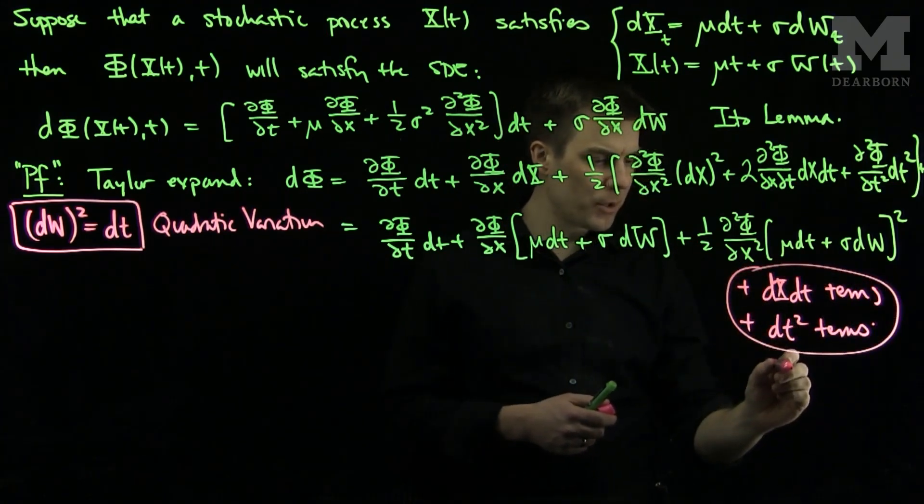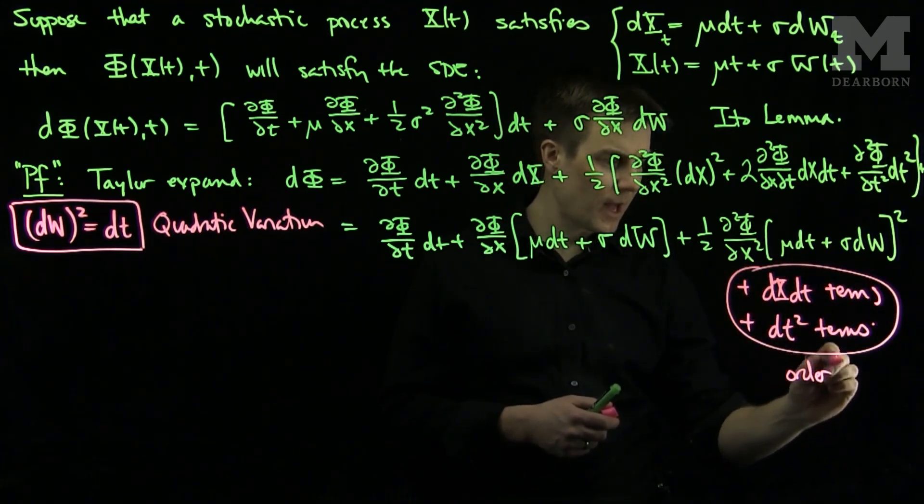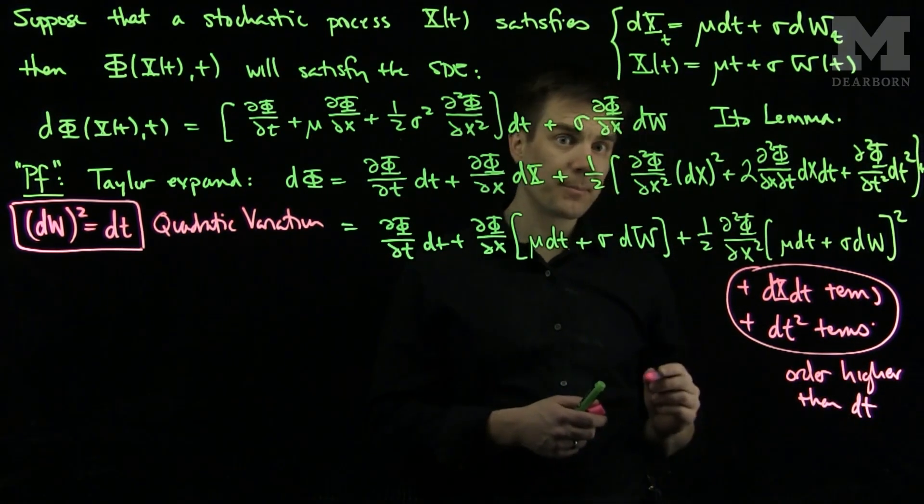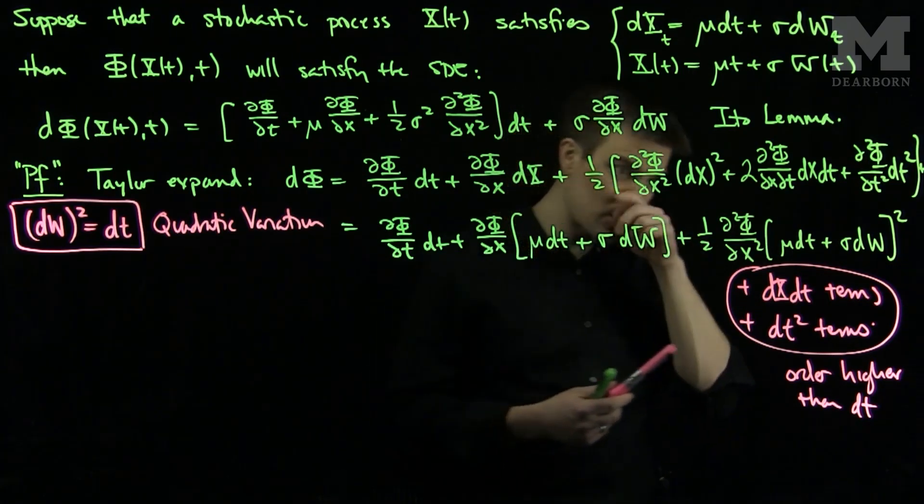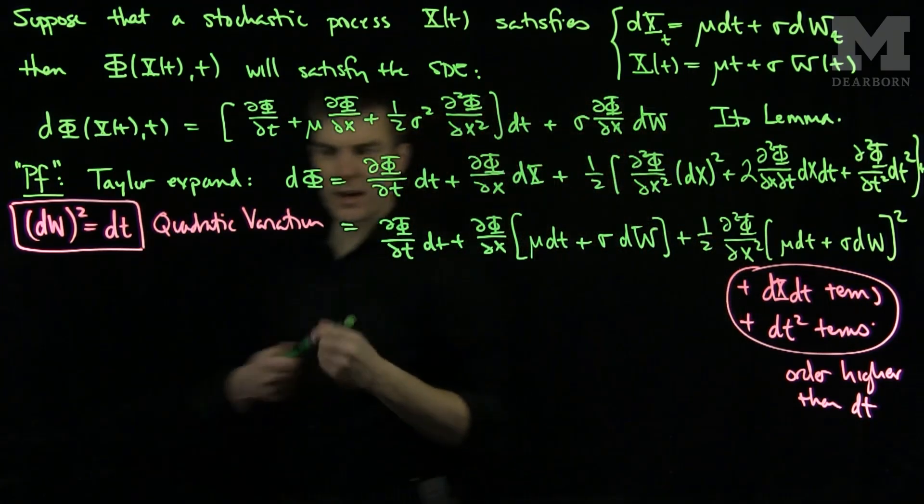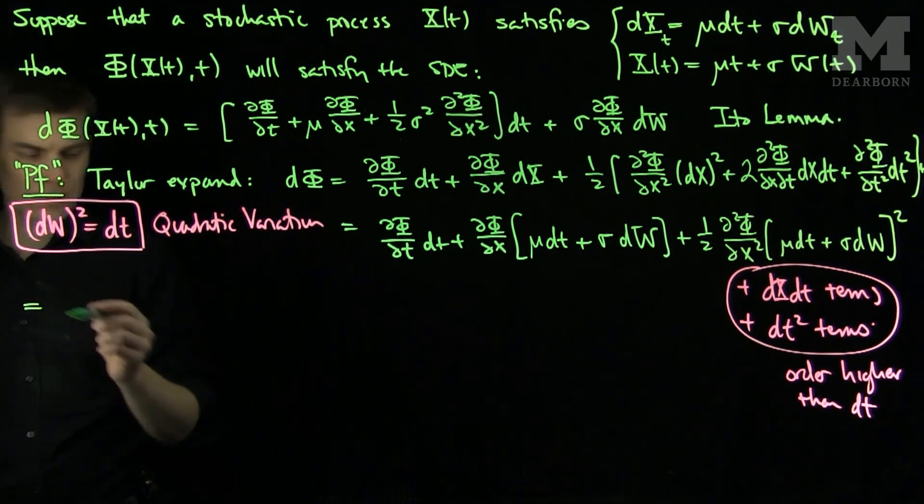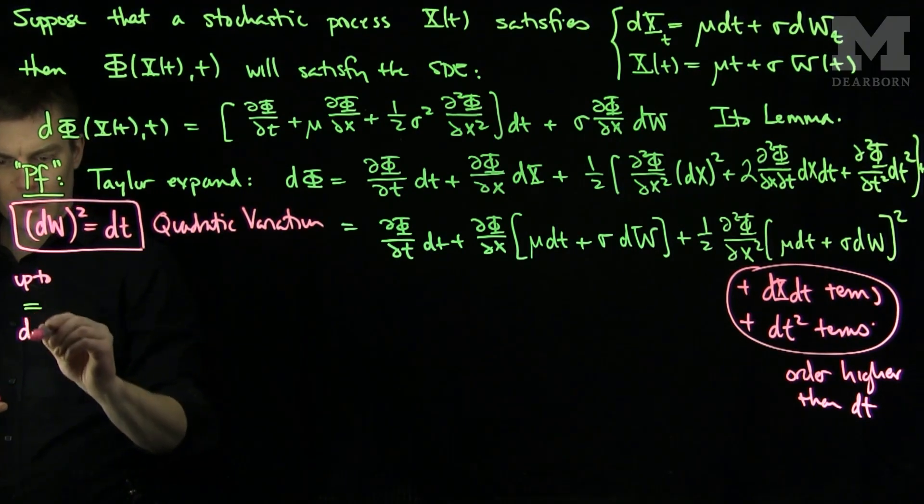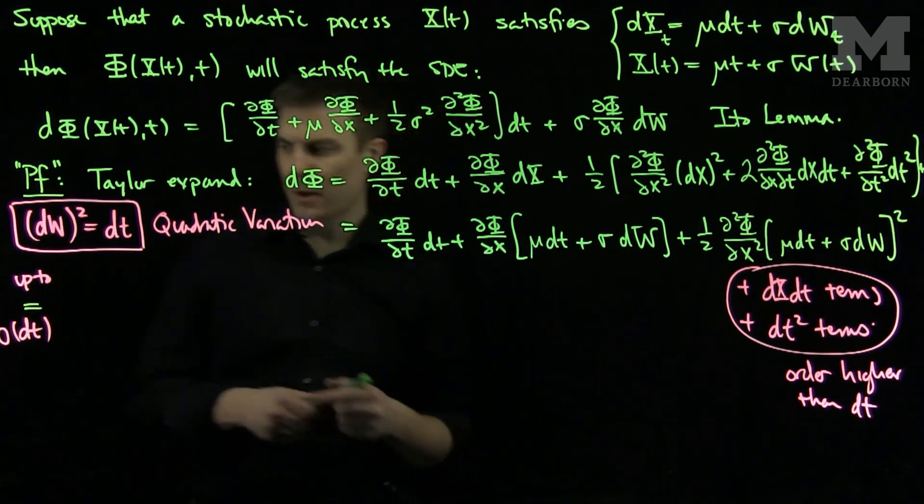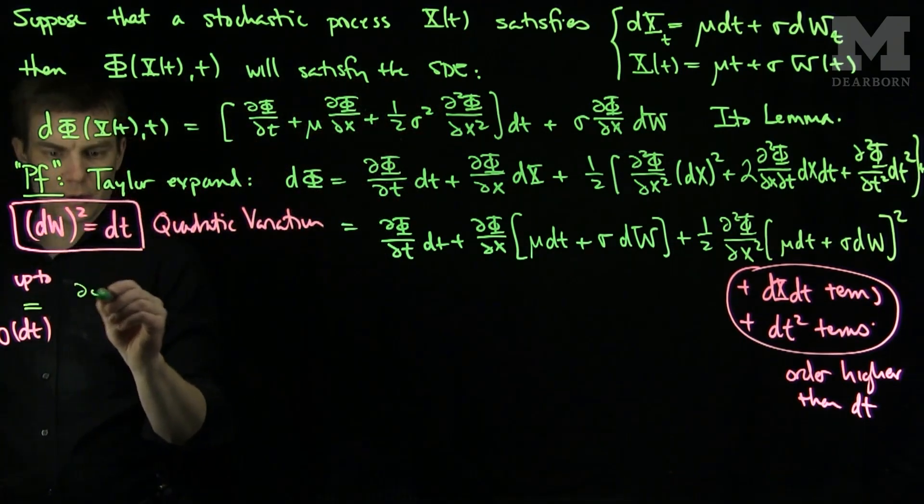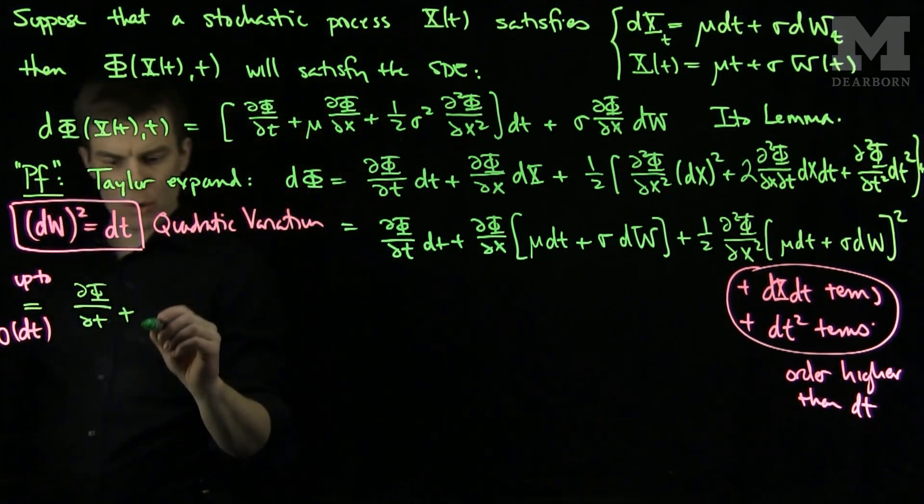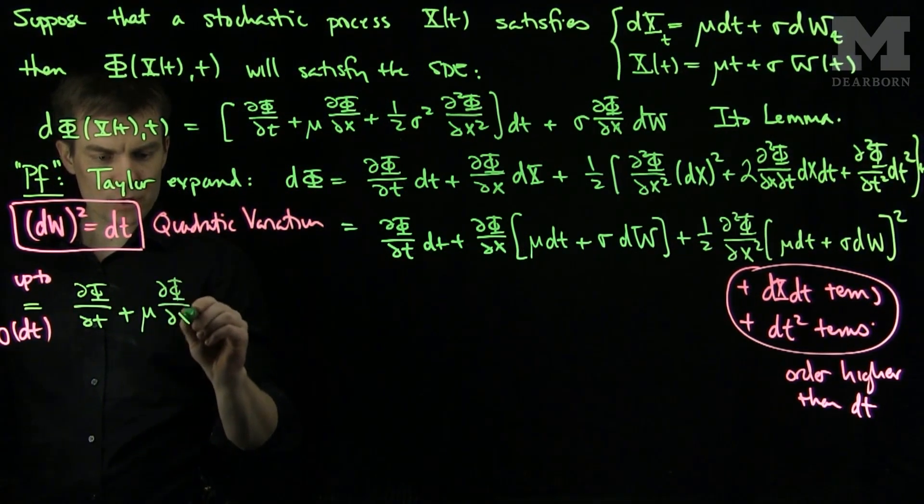These terms, these leftover terms, will all be order higher than dt. So we'll disregard them in terms of the differential equation. So, if we simplify this, we'll continue on. We will see, up to terms, so this will be equal to, up to order dt terms, we'll be equal to ∂φ/∂t + μ∂φ/∂x.